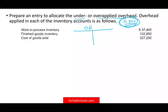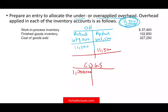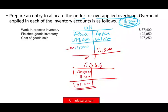In the overhead account, the debit side has the actual ($479,000) and the credit side has the applied ($467,500), leaving a debit balance of $11,500. In the simple managerial accounting approach, you close this account entirely to Cost of Goods Sold — credit Manufacturing Overhead $11,500 and debit Cost of Goods Sold $11,500, bringing overhead to zero.